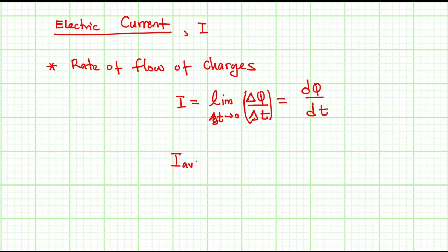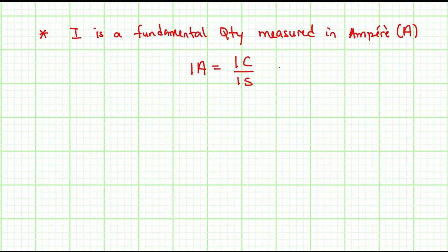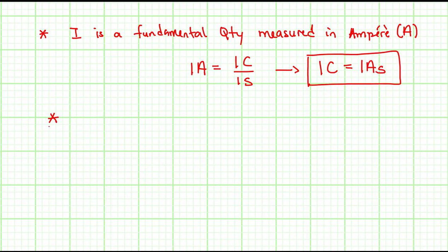The average current I_average is equal to the change in charge divided by the time taken for the charge to go through the conductor. Electric current is a fundamental quantity measured in amperes — 1 ampere is equivalent to 1 coulomb divided by 1 second, meaning 1 coulomb is a derived unit equal to 1 ampere-second. Current has both a direction and a magnitude, so it is a vector quantity.